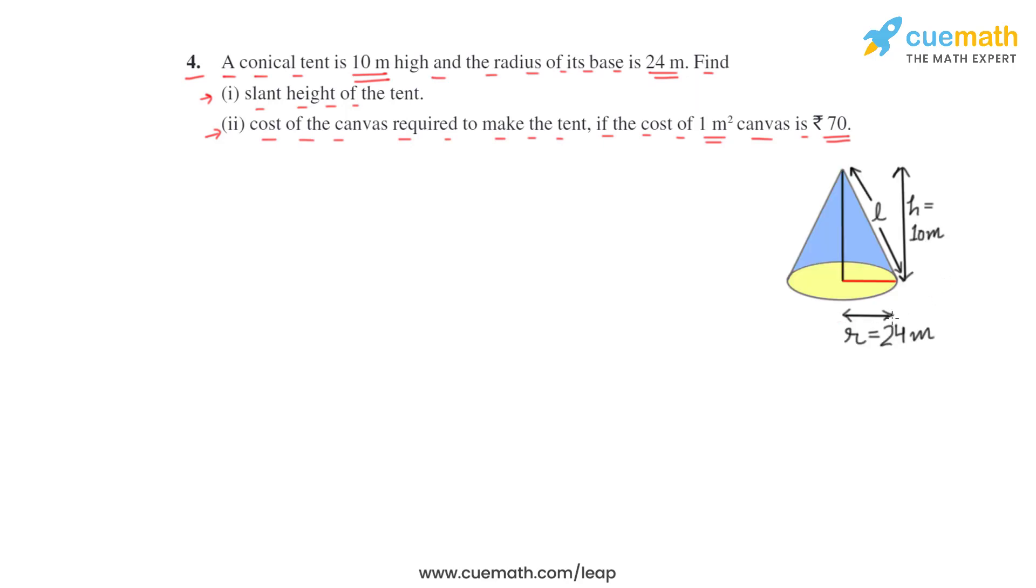So there is a cone and they have given that the radius is 24 meters and height is 10 meters. And first we have to find the slant height. So this part, as you can see, becomes a right triangle. We can make it again, so this will be the height 10 meters and radius of base is 24 meters and this will be the length, the slant height l.